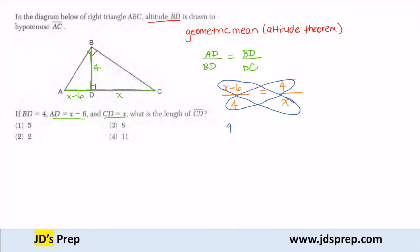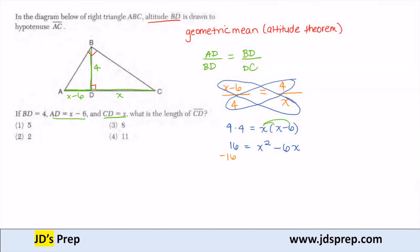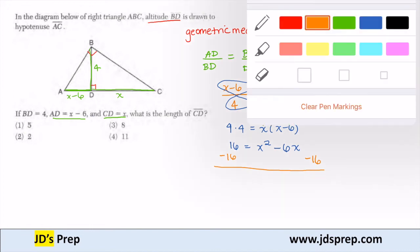So 4 times 4 is equal to x times (x minus 6). 4 times 4 is 16. And on the right side, we're going to distribute. So x times x is x squared minus 6x. In order to solve this, I see that I have x squared, and to solve a quadratic I need it equal to 0. So we're going to subtract 16 over to the other side of the equal sign.